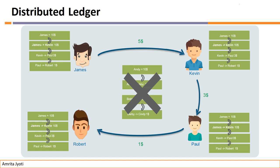You can clearly see three transactions recorded: James sends $10 to Kevin, then Kevin sends $3 to Paul, then Paul sends $1 to Robert. This information of three transactions is the same in every ledger. In this diagram, four nodes are shown: James, Kevin, Paul, and Robert — and all four have the same ledger. There is no central data storage; everyone has the same ledger.